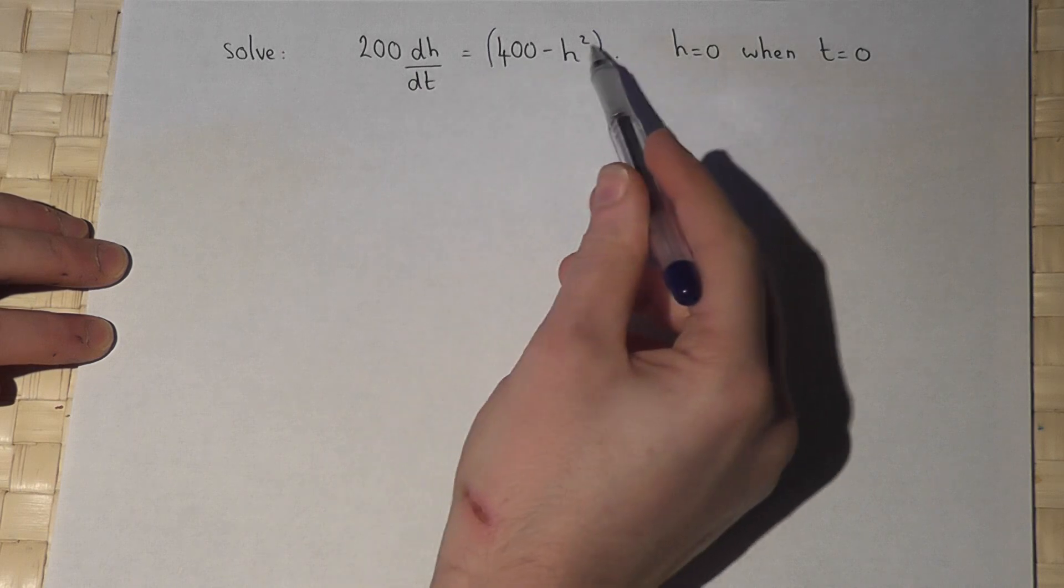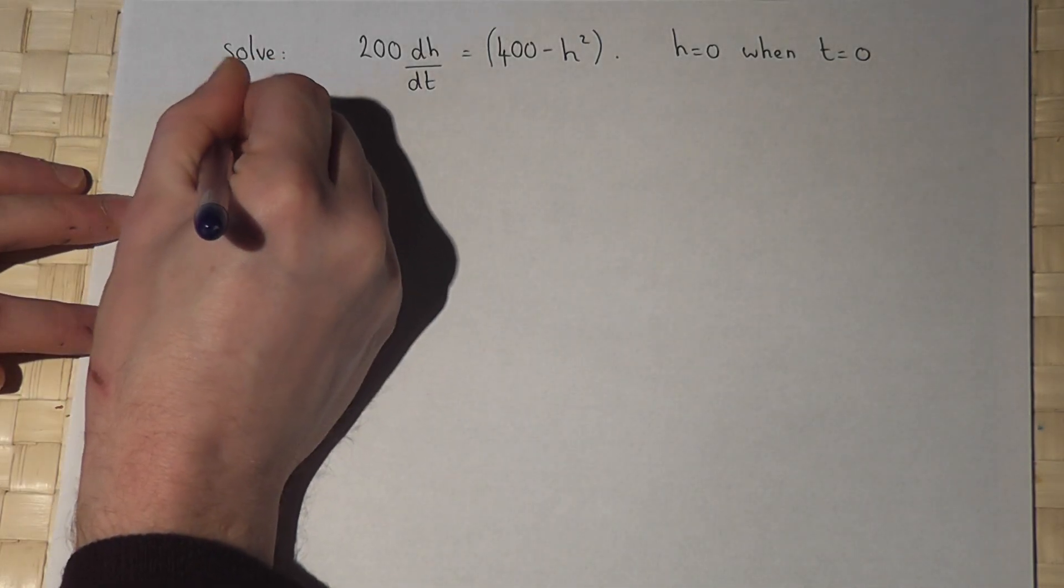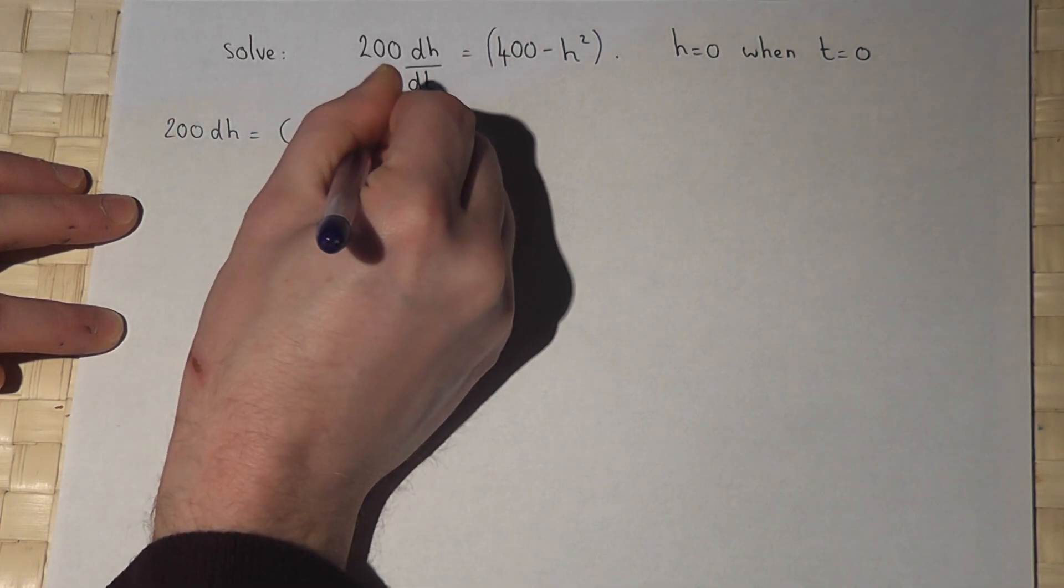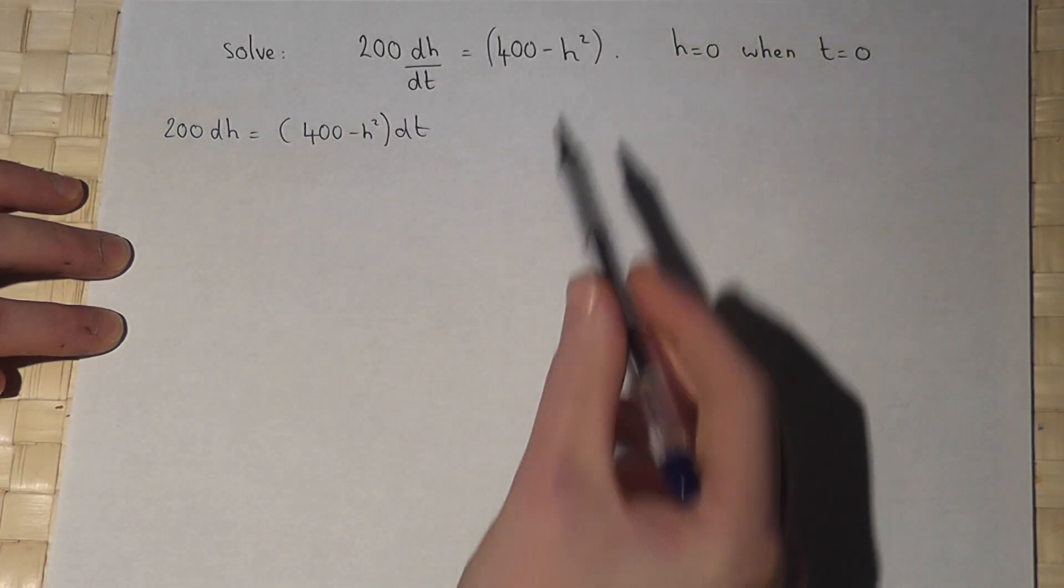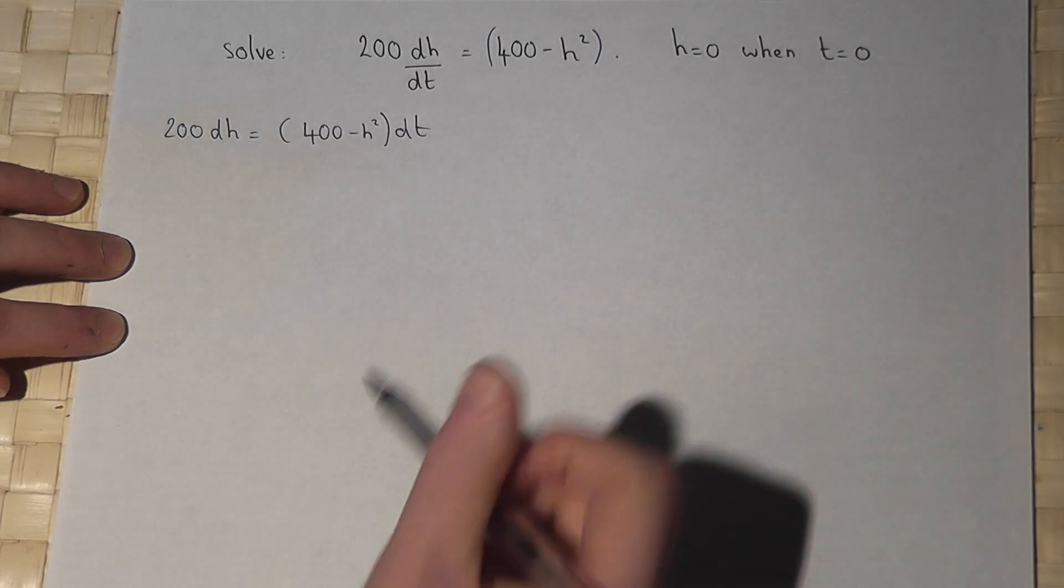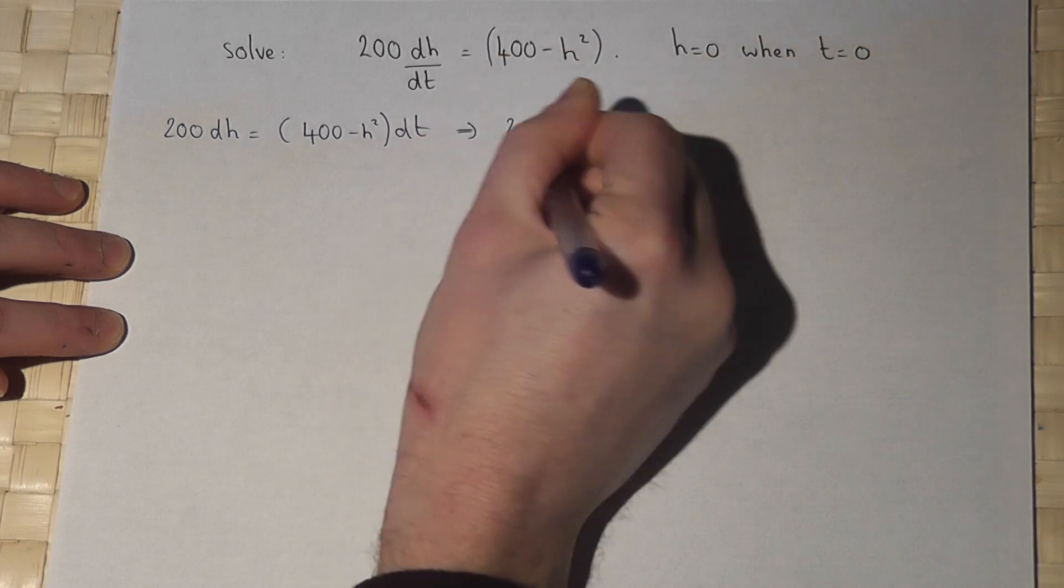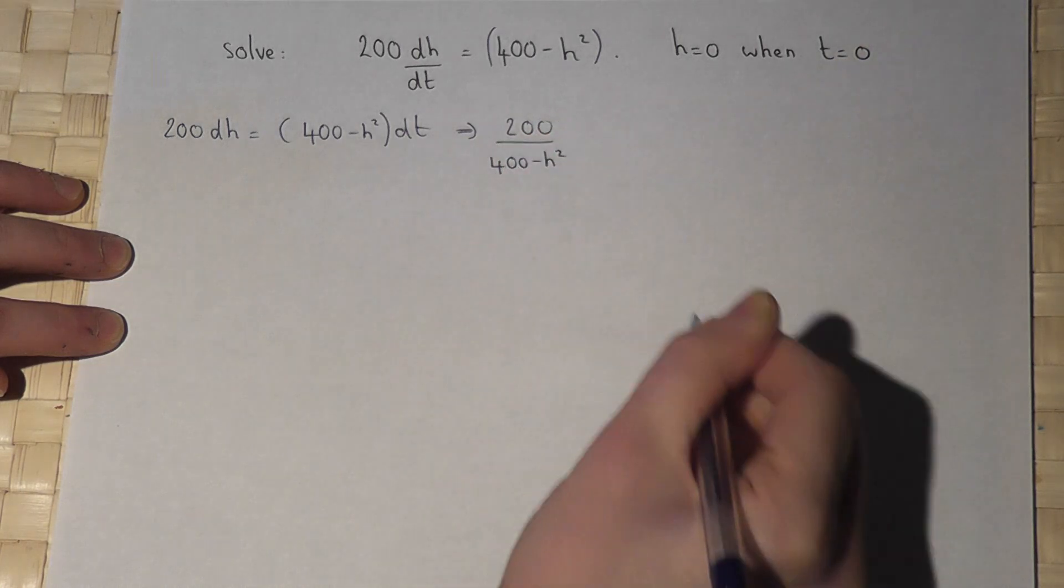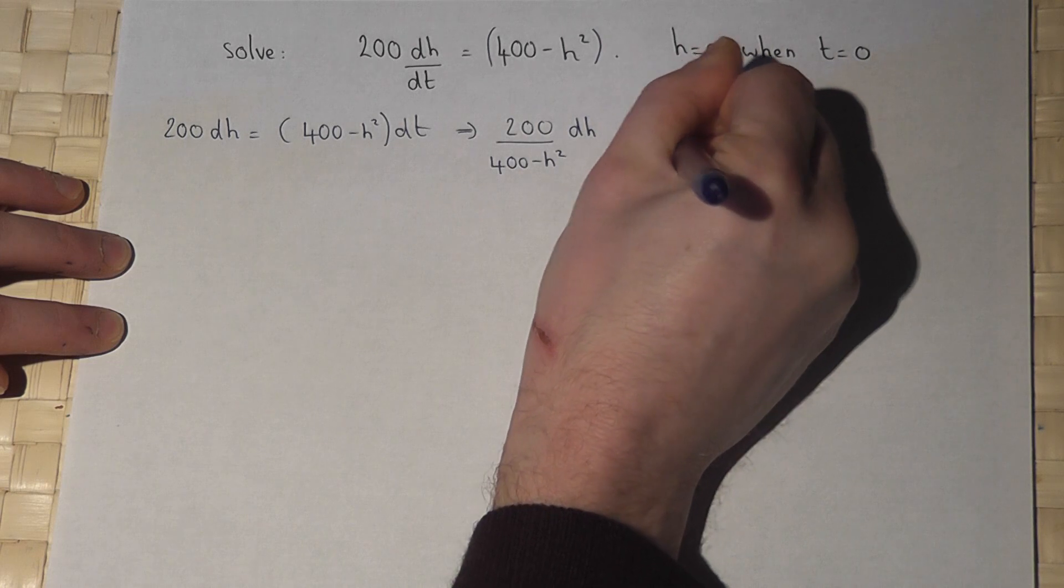If I begin by multiplying by dt I get 200 dh equals bracket 400 minus h squared dt. If I then divide by 400 take away h squared I get 200 over 400 minus h squared dh equals dt.